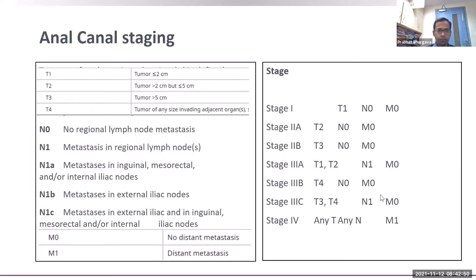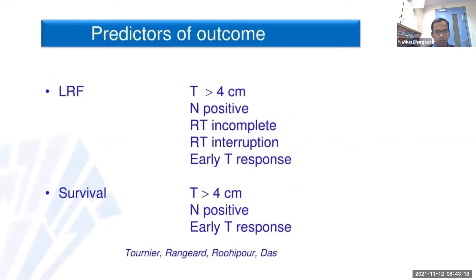Staging: T1 is tumor less than 2 cm; T2 is up to 5 cm; T3 is more than 5 cm; T4 invades adjacent organs. Nodal disease is N1 for any regional lymph node metastasis; M1 for distant metastasis. Per AJCC 8th edition staging. Predictors of local-regional failure include tumors more than 4 cm, ulcerative lesions, nodal positivity, incomplete radiotherapy, or early treatment response. Survival predictors include tumor more than 4 cm, node positivity, and delayed tumor response.